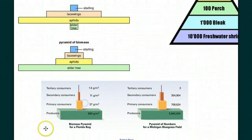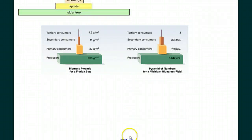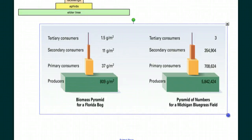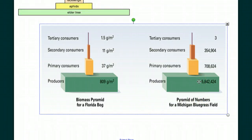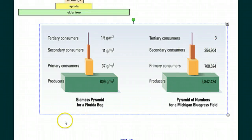We can compare biomass and numbers directly. As we move up trophic levels, there's less and less biomass in grams of organic matter per square meter, and this also affects numbers in any type of system. Many many producers can only sustain fewer primary consumers, fewer secondary consumers, and fewer tertiary consumers.